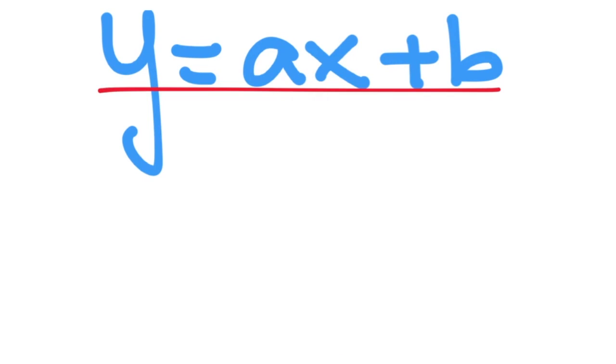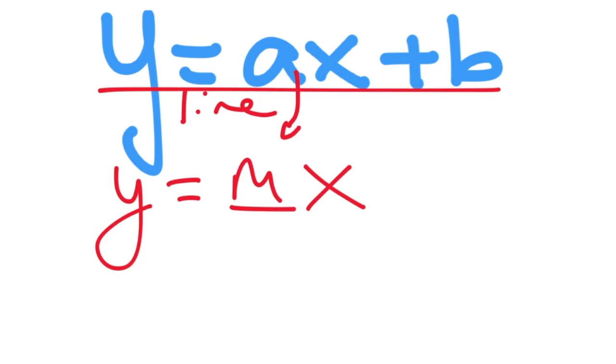Now this is the equation for any line. The equation for a line that is a proportional relationship is just Y equals MX. We change this A to an M. The M stands for slope.